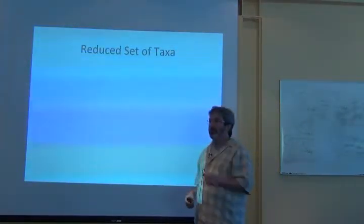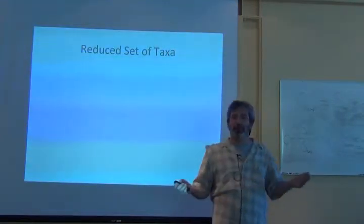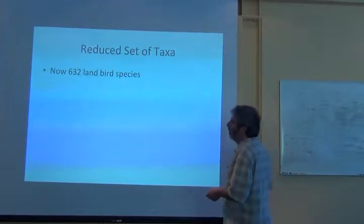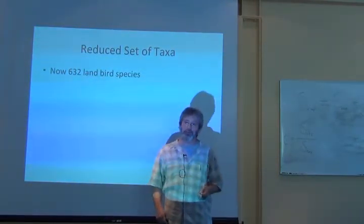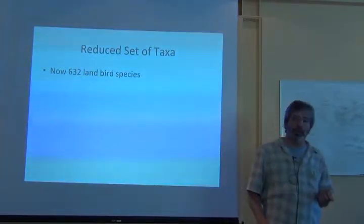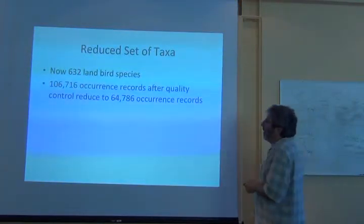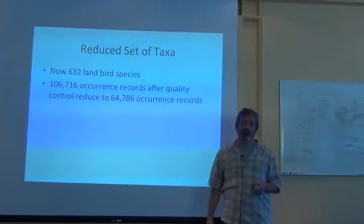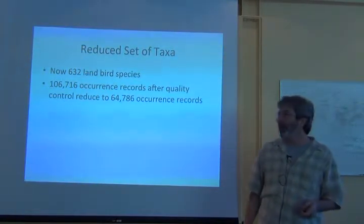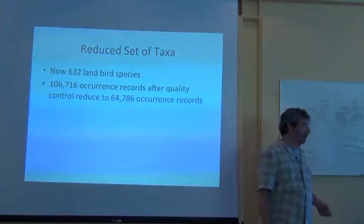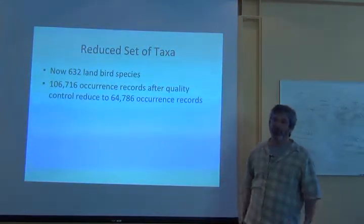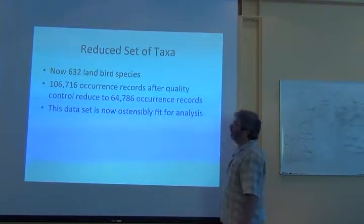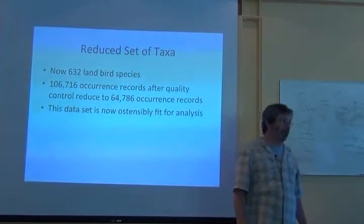In some sense I cleaned up the taxonomic information — because I was in a hurry, I just threw out the inconvenient stuff. I reduced the taxa to 630 terrestrial bird species in Kenya. After these quality control measures, I went from 106,000 records down to 65,000. I had been hoping that non-standard names would refer to only one or two records each, but rather it was 40,000 records that I lost.